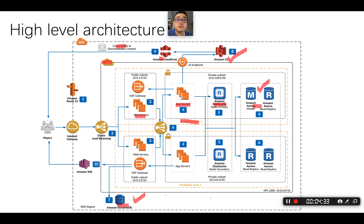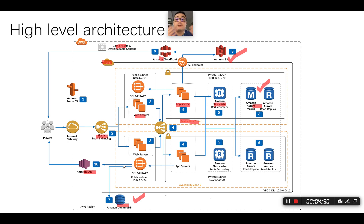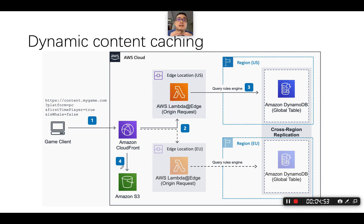And in terms of the load balancing, it's pretty standard. You can use Elastic Load Balancer, serving as a Layer 4 and Layer 7 load balancer. In terms of the notification, you can use AWS SNS. So this is pretty much it in terms of the architecture. And now let's dig into some of the specific use cases.